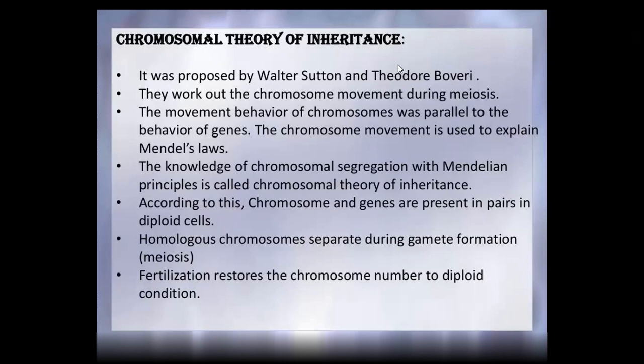We have to reduce the chromosomes during gametic formation. For example, humans have 46 chromosomes; we have to separate homologous chromosomes into 23 chromosomes. For sexual reproduction, we take 23 chromosomes from the mother and 23 from the father to maintain the 46 chromosome number.